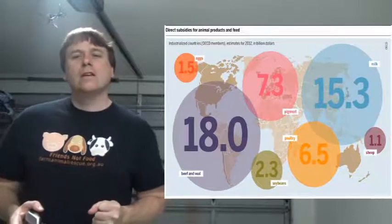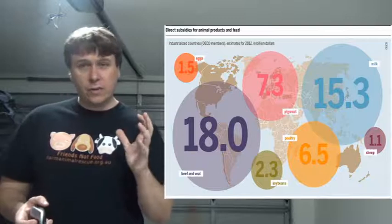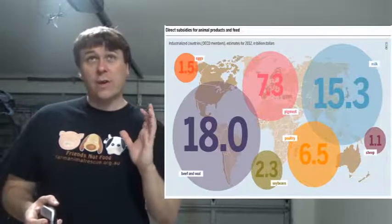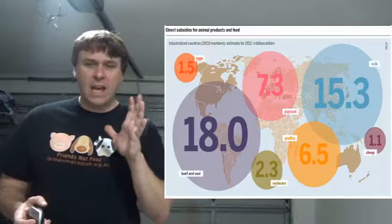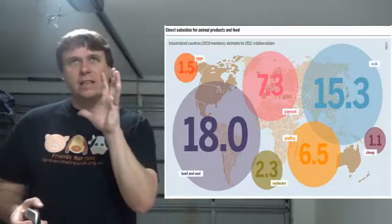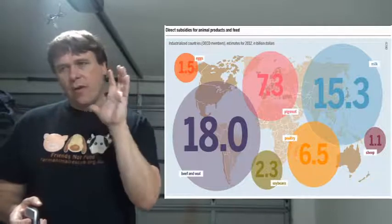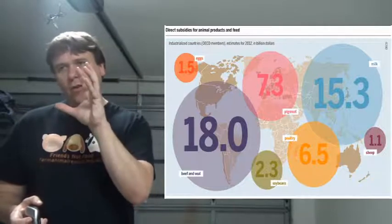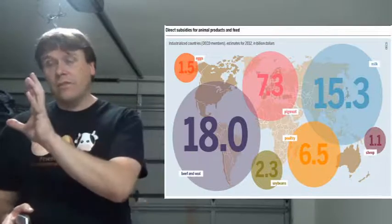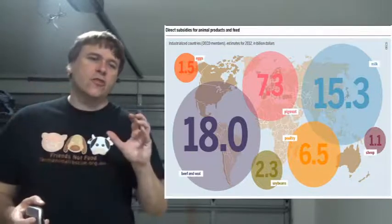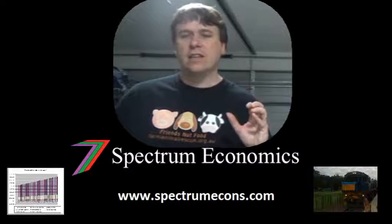Expansionary policy — whether monetary or fiscal — is about increasing growth: putting more money into the economy through government investment or lowering interest rates to encourage others to invest. Contractionary policy is the opposite — you're trying to reduce the size of the economy, which could address things like inflation.